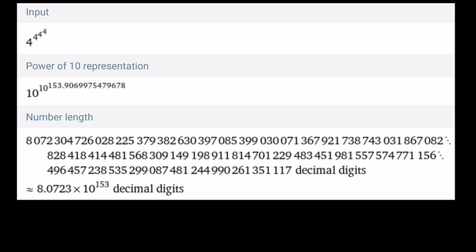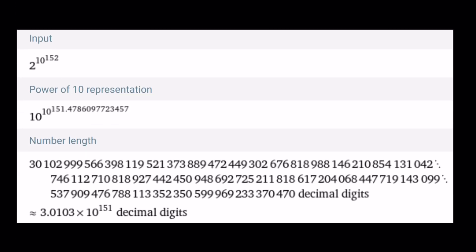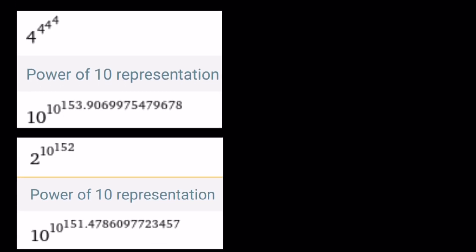The first number is very large — here's its power-of-10 representation. It has about 8 times 10 to the power 153 digits — that's 8 followed by 153 zeros in terms of digit count. The other number has fewer digits because it's the smaller number. Putting them together confirms the top number is larger. Thank you for watching — I hope you enjoyed it. Please comment, like, and subscribe. See you next time. Be safe, take care, bye!